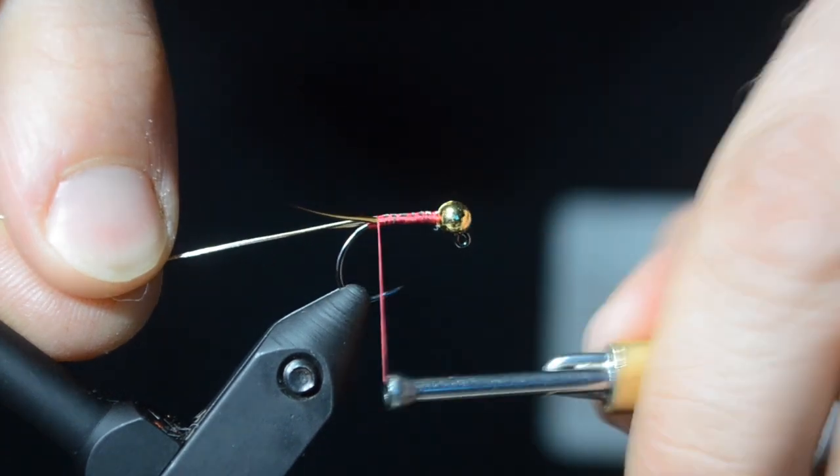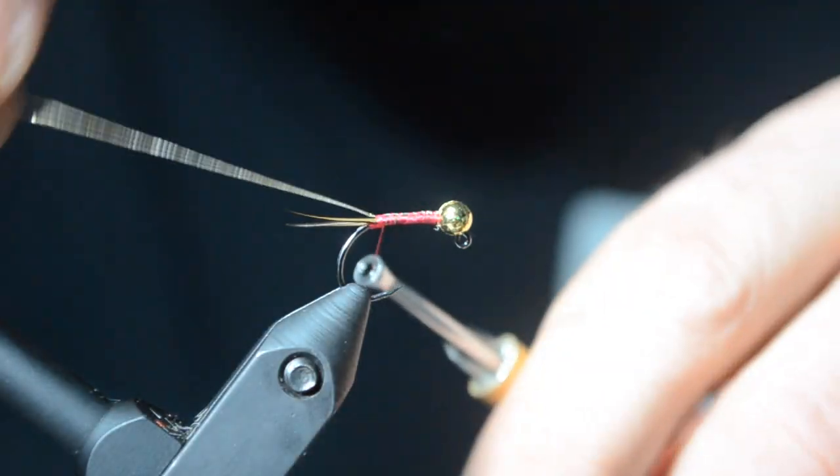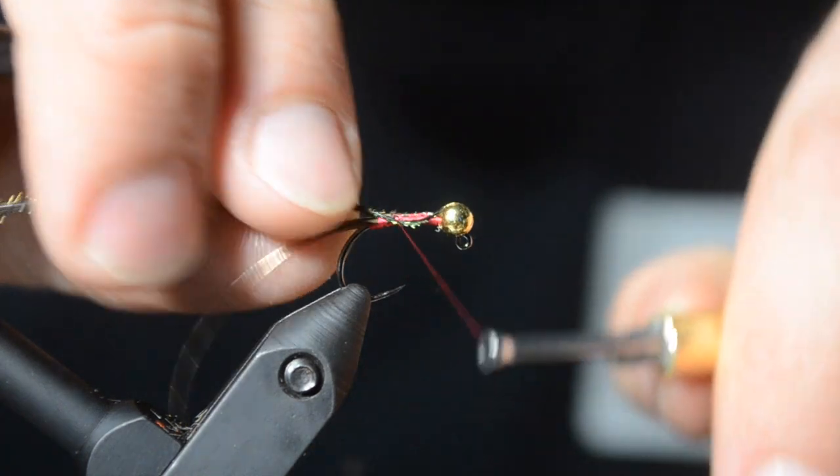And I'm going to go ahead and tie in some oval tinsel. All the way back again, right up to the bead. Keep a nice straight taper.